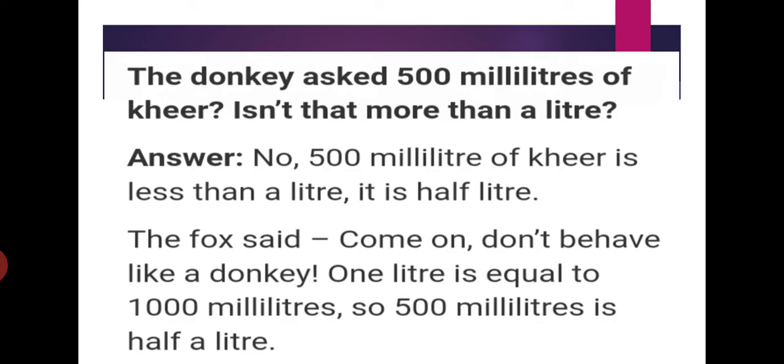Students, there are many questions in the story — you can answer them one by one in your book itself. So 500 millilitres of Kheer is less than a litre. 500 millilitres is a half litre. The fox said: Don't behave like a donkey. 1 litre is equal to 1000 millilitres, so 500 millilitres is half a litre.